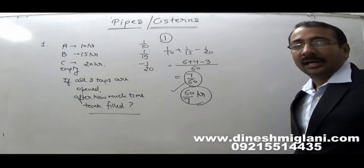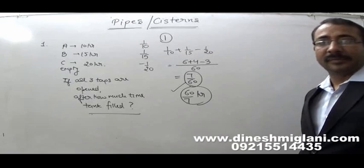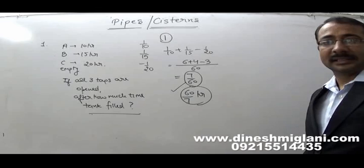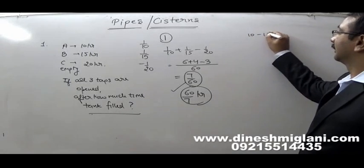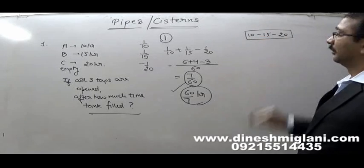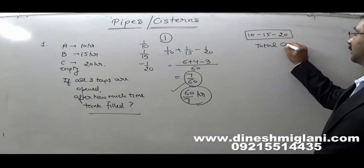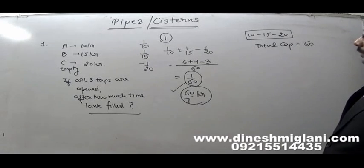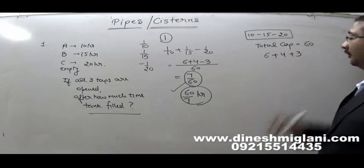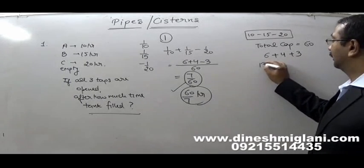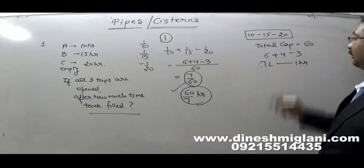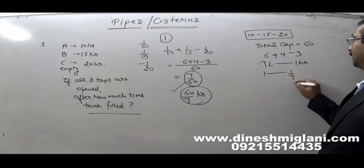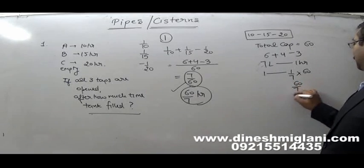The second approach: instead of taking total capacity as 1, take it as the LCM of 10, 15 and 20, which is 60. So total capacity is 60 liters. A fills 6 per hour, B fills 4, and C empties 3. Together: 6 + 4 − 3 = 7 liters per hour. Time to fill 60 liters is 60/7 hours — same answer. Both approaches confirm 60/7 hours.